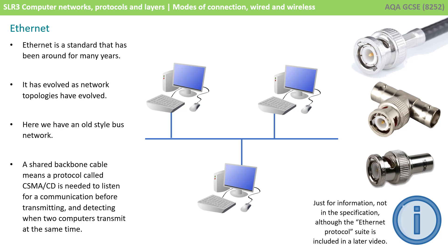Ethernet is a standard that's been around for many years and has evolved as networking topologies have also evolved. In a bus network, a shared backbone cable means a protocol such as CSMA-CD — Carrier Sense Multiple Access Collision Detection — is needed to listen for communications before transmitting and to detect when two computers transmit at the same time, because there's only one cable between all the computers. We can also see the BNC connectors on the end of those cables.